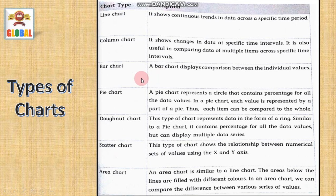Next is a bar chart. You know this very well. A bar chart displays comparison between the individual values. The next type of chart is a pie chart. A pie chart represents a circle that contains percentage of all the data values. In a pie chart, each value is represented by a part of a pie. Thus, each chart can be compared to the whole. You may see the example of this pie chart in your geography textbook. That is the division of land and water on earth or components of gases in the air that is shown in your EVS or maybe in geography.